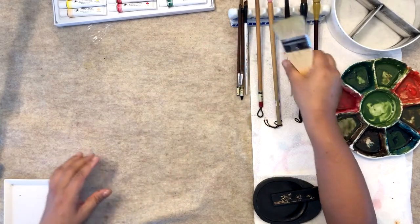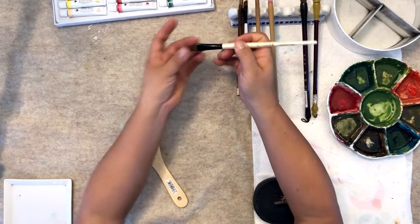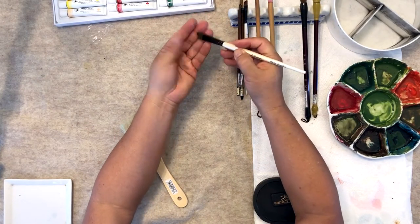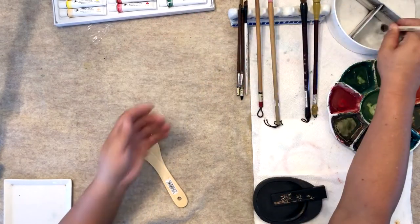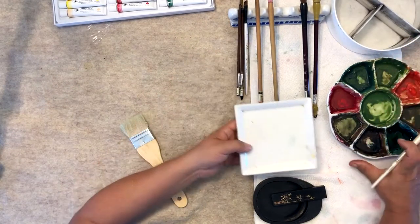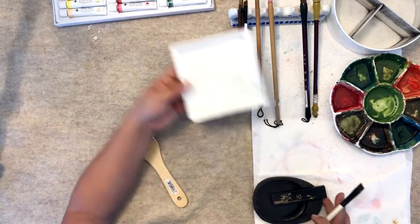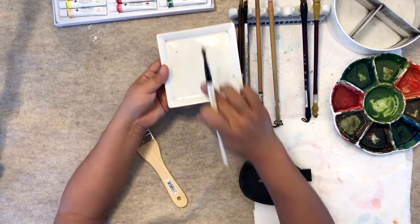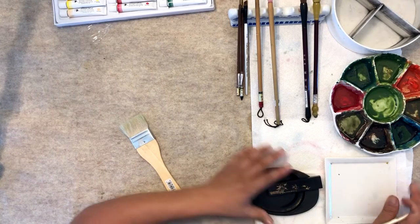And then we have a blending brush. Blending brush is made of synthetic hair, so you can use it to mix your colors. And then this is a blending plate. So when you load three different colors, you check your colors on the blending plate, and that should be nearby.